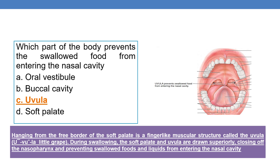The next question: which part of the body prevents swallowed food from entering the nasal cavity? The answer is option C — uvula. Hanging from the free border of the soft palate is a finger-like muscular structure called the uvula, which means 'little grape.' During swallowing, the soft palate and uvula are drawn superiorly, closing off the nasopharynx and preventing food and liquids from entering the nasal cavity. The correct option is option C.